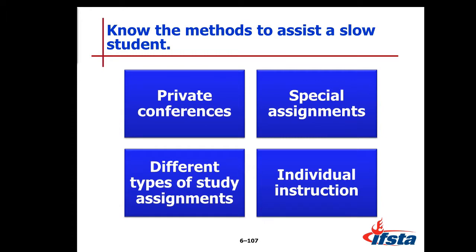Know the methods to assist a slow student. Private conferences — pull them off to the side and have a discussion with them; make sure they're getting everything they need out of the course. Give them special assignments adapted specifically to them, different types of study assignments, or individual instruction to help them through the areas they're having issues with.